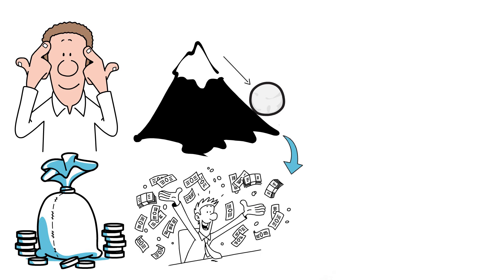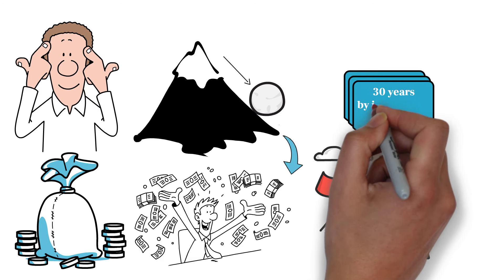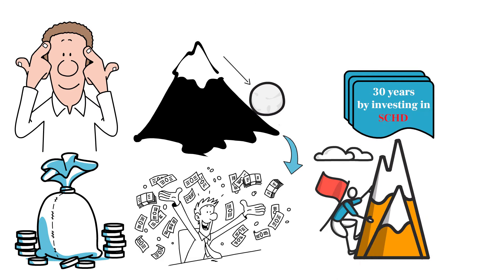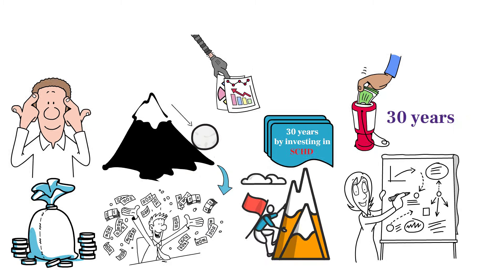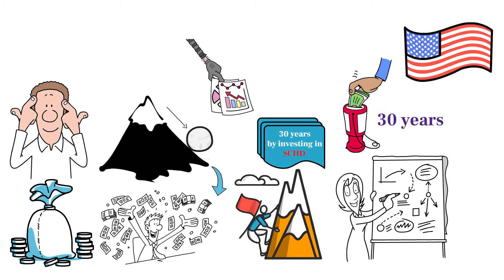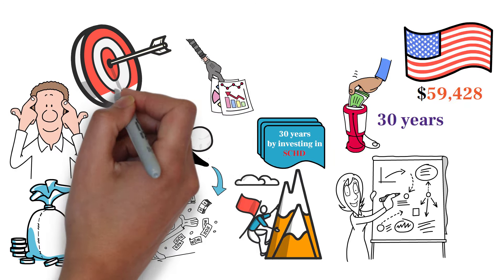Now, let's get into the specifics of how you can achieve the goal of living off dividends in 30 years by investing in SCHD. Our goal is to build a portfolio that generates enough dividend income to replace the average U.S. annual salary in 30 years. As of the most recent data, the average U.S. annual salary is $59,428. This will be our target annual income solely from dividends.